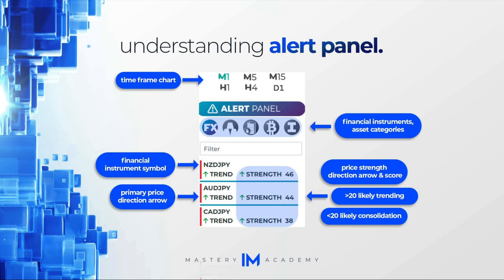Under the filter search tab, you will find the financial instrument symbol, as well as the price strength directional arrows and scores, and the primary price directional arrow. For the strength score, if you have a greater than 20 point score, you are likely going to see trending conditions. If the score is less than 20, you will likely see consolidation.